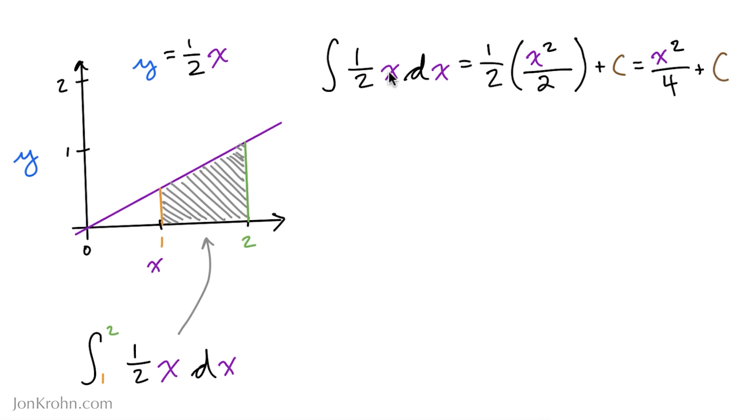And then we can use the power rule to integrate x. So according to that power rule, x to the power of 1 will have 1 added to that power, so it becomes 2. And then we divide by 2 as well. So that is what we get after applying the power rule to x, is everything in the brackets here. And then we can bring the half back into the picture that we originally ignored.